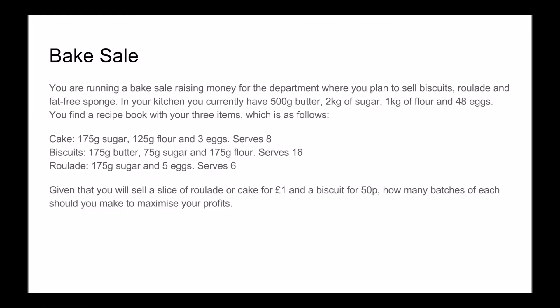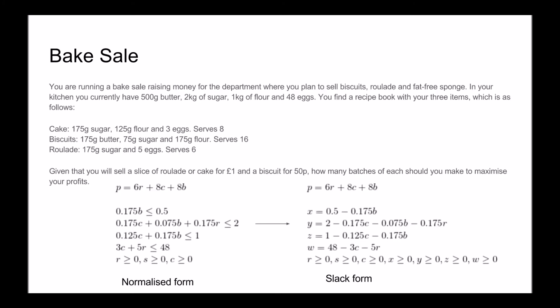Let's take a look at the bake sale example presented earlier. If we extract the conditions from the problem, we get the equation for our profit at the top left-hand side, and the constraints on our bake sale underneath it. This is already in normal form since we are doing a maximisation problem and all constraints are less than some value. All non-basic variables r, s, and c are also greater than 0. The equations on the right have been converted into slack form, with slack variables x, y, z, and w.